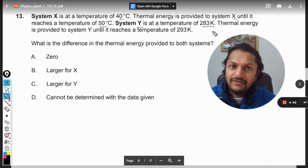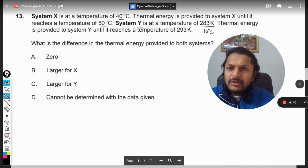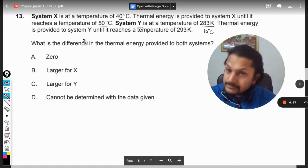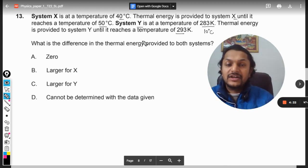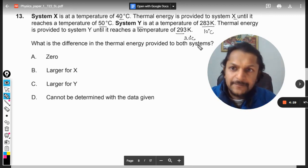283 Kelvin is approximately 10 degrees C. Thermal energy is provided to System Y also until it reaches the temperature of 293 Kelvin, which is 20 degrees C. What is the difference in the thermal energy provided to both systems?